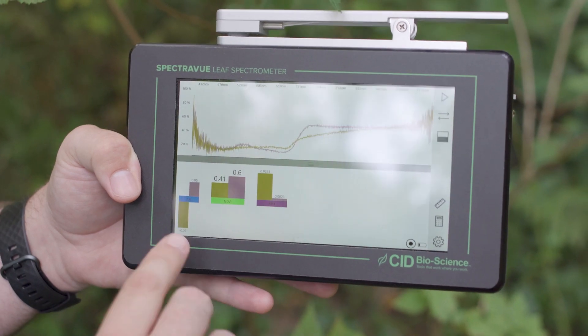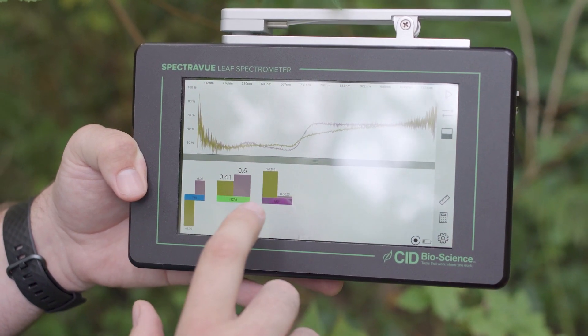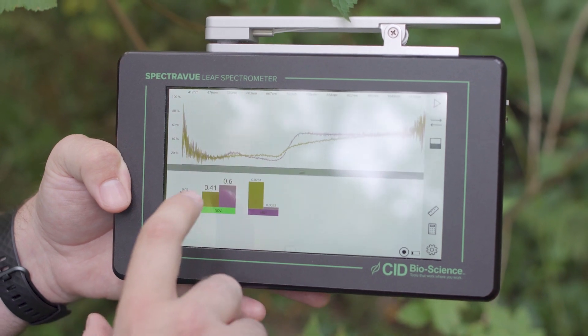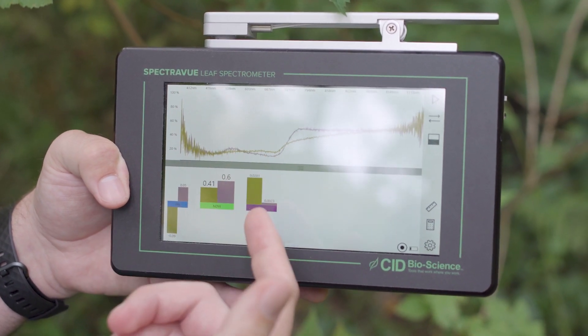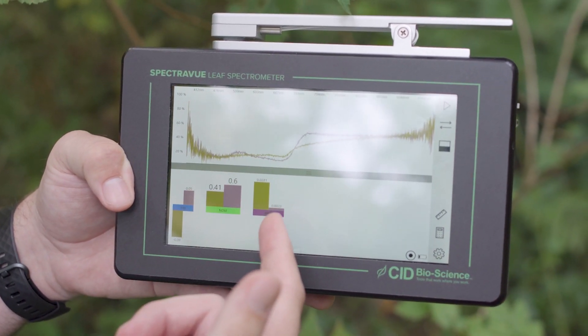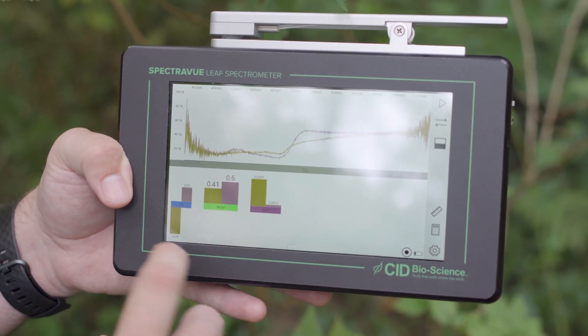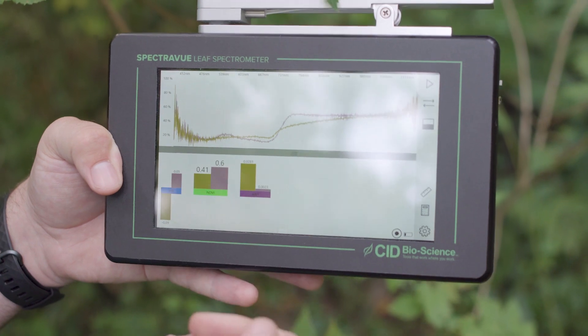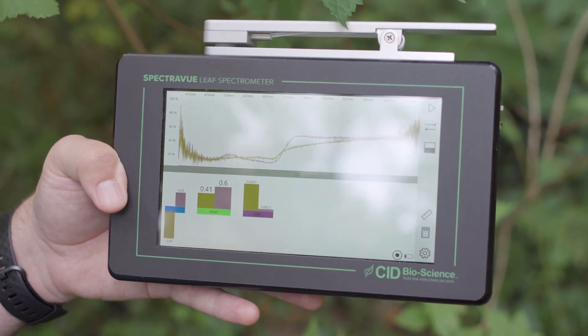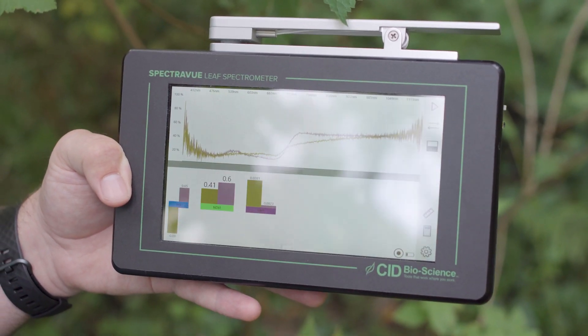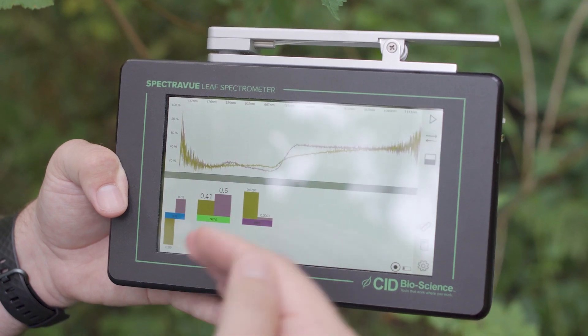And so with these numbers, what you can see off the bat is that the unhealthy leaf has a much higher anthocyanin content. It has a lower NDVI, analogous to lower chlorophyll content, and it also has a lower PRI, so the photochemicals are at a lower level than with the healthy leaf.